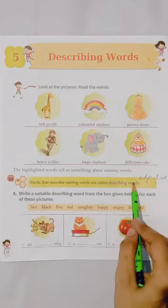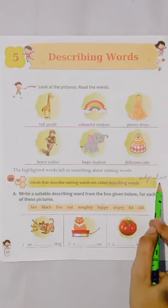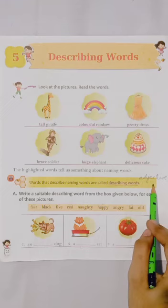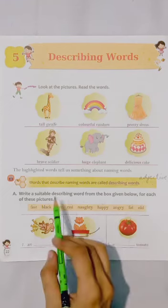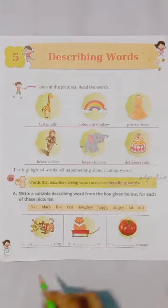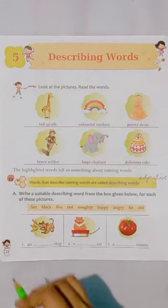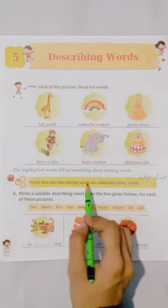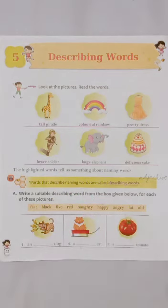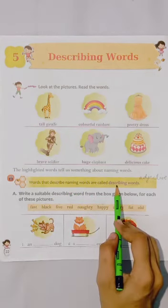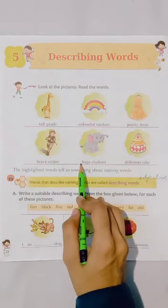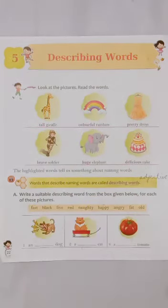Describing words ke liye ek aur term use hota hai — adjective. But yeh word aap higher classes mein padhenge. So what are describing words? Words which give us information about the naming words are called describing words. Aise words jo hume naming words ke baare meh batate hain, woh naming words kaise hain, unko hum describing words bolte hain. So tall, colorful, pretty, delicious, huge, brave — these words are describing words.